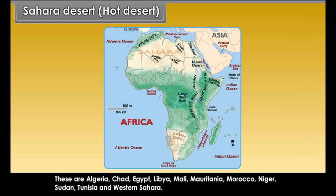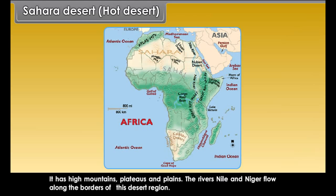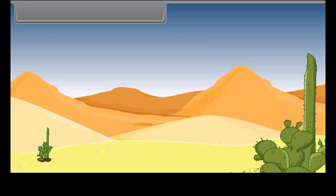The 11 countries of the Sahara are Algeria, Chad, Egypt, Libya, Mali, Mauritania, Morocco, Niger, Sudan, Tunisia, and Western Sahara. It has high mountains, plateaus and plains. The rivers Nile and Niger flow along the borders of this desert region.